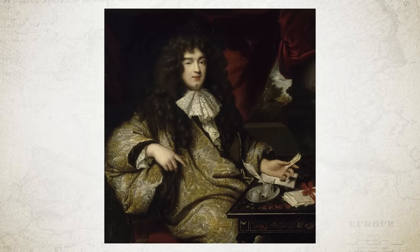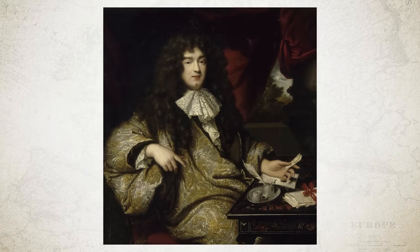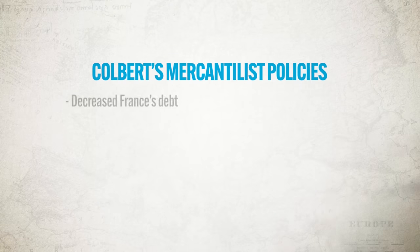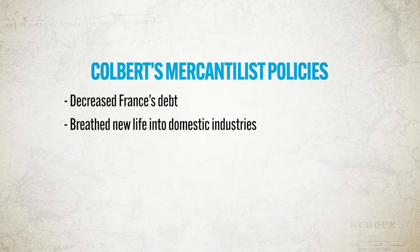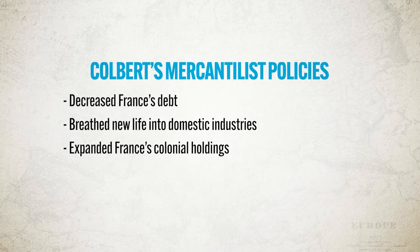Additionally, Louis essentially made himself the head of the Catholic Church in France, merging political and religious loyalties of the French population. Finally, Louis worked to consolidate power through military expansion. His finance minister Jean-Baptiste Colbert shaped the French economy according to mercantilist policies, enacting steep tariffs and ensuring France exported more than it imported. This decreased France's debt, breathed new life into domestic industries, expanded France's colonial holdings, and created a favorable balance of trade. But despite all the good work Colbert did, Louis's wars undid most of it.